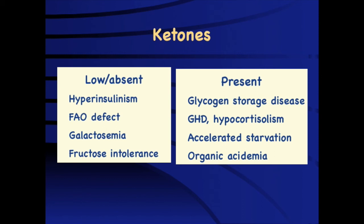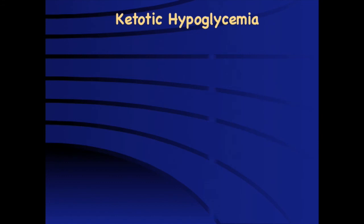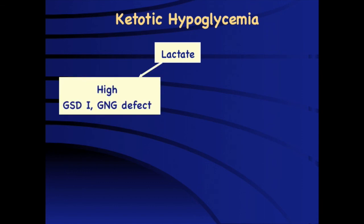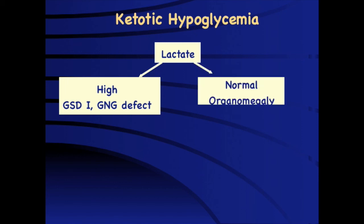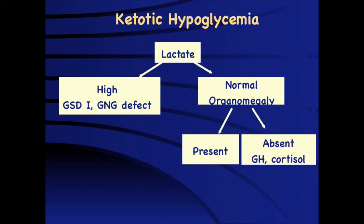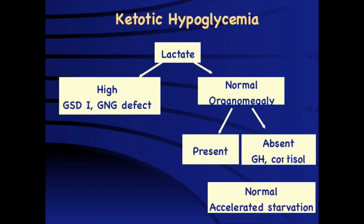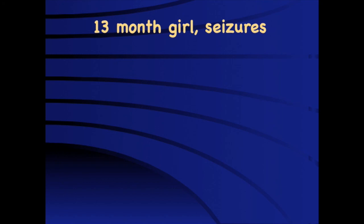Most other conditions present with ketotic hypoglycemia — including glycogen storage disease, growth hormone deficiency, adrenal insufficiency, ketotic hypoglycemia of infancy, and organic acidemia. If a child has ketotic hypoglycemia, the next step is to look at lactate. If lactic acidosis is present, we are dealing with glycogen storage disease type 1. If lactate is normal, look at organomegaly — if present, consider GSD type 3. If organomegaly is absent, look at growth hormone and cortisol levels to confirm hypopituitarism. If those levels are normal, consider accelerated starvation.